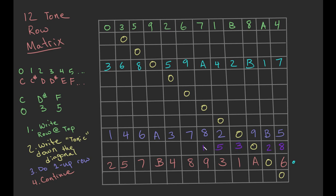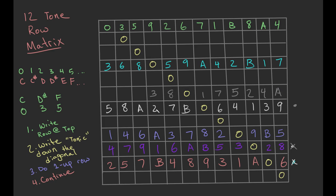New B, new zero: two, eight, three, five, six, one, nine, seven, A, four. An important check: always make sure you only have one of each number in every single column. If you have the same number twice, you've done something wrong. So B going to zero: six, four, one, three, nine, B, seven, two, A, eight, and five.